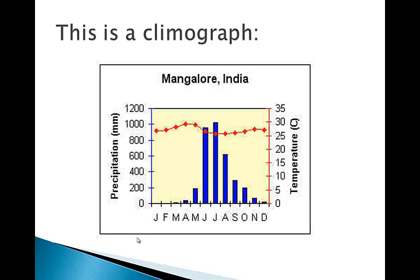Each column represents average monthly precipitation and temperature for each of the months. On the left-hand vertical axis is precipitation, measured in millimeters. On the right-hand vertical axis is temperature, measured in degrees Celsius. Precipitation is shown on your climate graph with blue bars — the precipitation graph is always a bar graph and it's always blue. Temperature is shown as a red line graph.